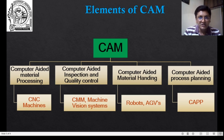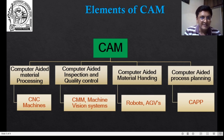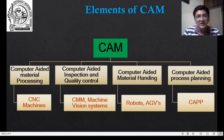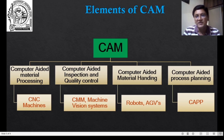Each of these activities is to be performed using automatic machines or software. CNC — Computer Numerical Control — machines are an important element of Computer Aided Material Processing. CMM Coordinate Measuring Machines and Machine Vision Systems are key sub-elements of Computer Aided Inspection and Quality Control. Robots and AGVs are used for Computer Aided Material Handling, and various CAPP systems are integral to Computer Aided Process Planning.